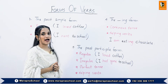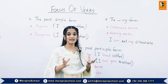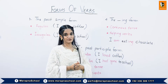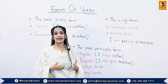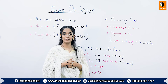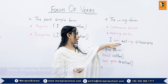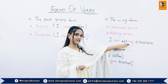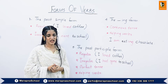The ing form is used in continuous sentences. To make sentences continuous, we add the suffix 'ing' to the base form. To put it in the continuous tenses, we use helping words before them — helping words can be is, am, are, was, were, had, have, has, will be, shall be, etc. The example for the ing form is 'I am eating chocolate,' where 'am' is the helping word used before the ing form 'eating.'